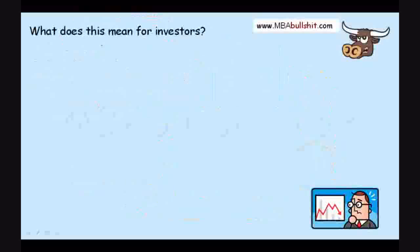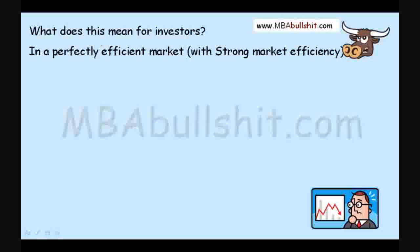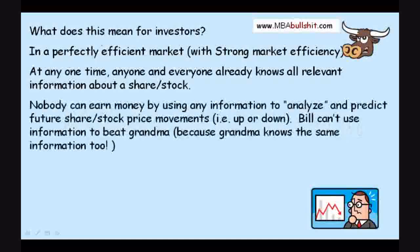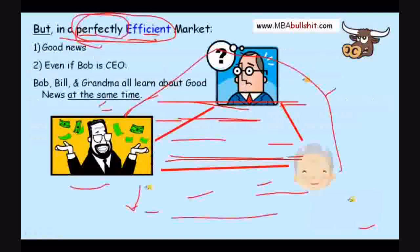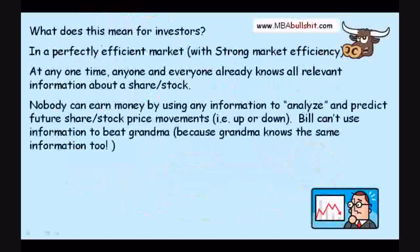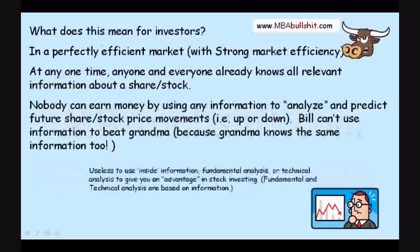What does this mean for investors? It means that in a perfectly efficient market with strong market efficiency, at any one time, anyone and everyone already knows all relevant information about a share of stock. So nobody can earn money by using any information — such as this sales report — to analyze and predict the future share or stock price movements either up or down. People like Bill cannot use the information to beat grandma, because grandma already knows the same information at the same time that Bill knows it. So it's useless to use inside information.